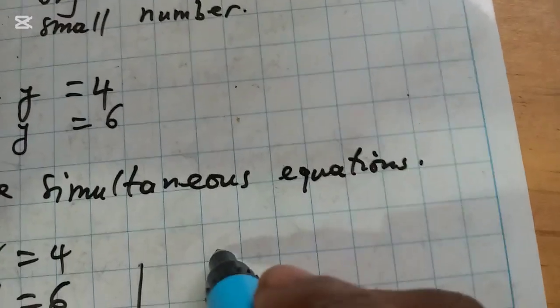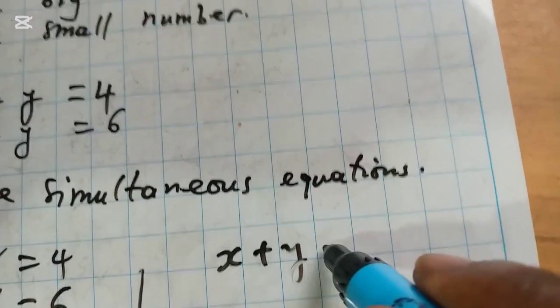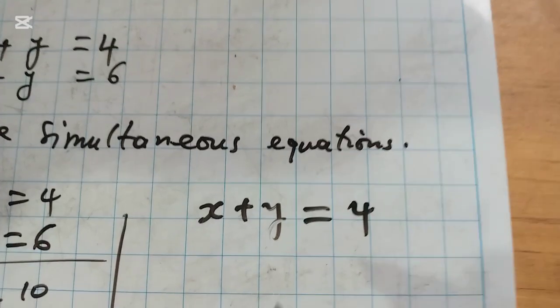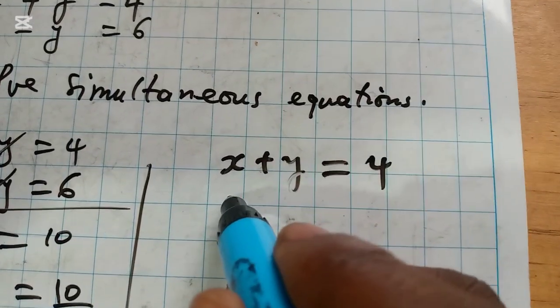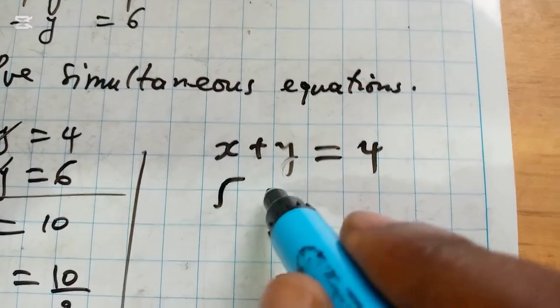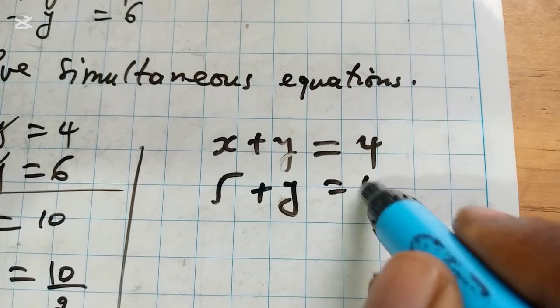X plus Y equals 4, and X equals 5, so we have 5 plus Y equals 4.